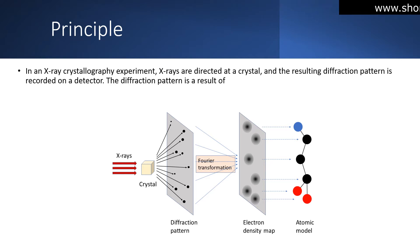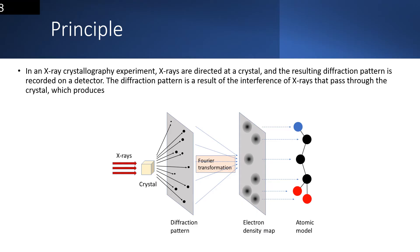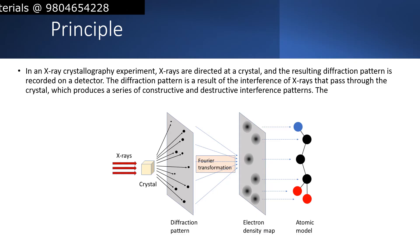The diffraction pattern results from the interference of X-rays that pass through the crystal, producing a series of constructive and destructive interference patterns.